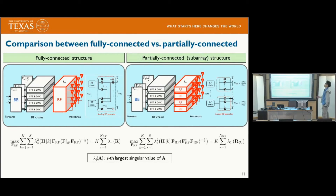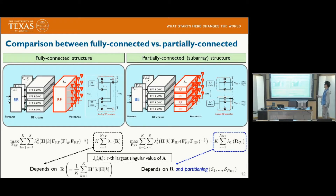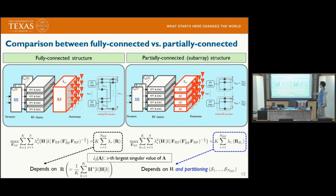Let's compare the two architectures. In the fully-connected structure, the objective function depends only on the covariance matrix R. On the other hand, in the partially-connected structure, the objective function depends not only on the covariance matrix but also on the partition — meaning how the sub-array structure is partitioned affects the performance.